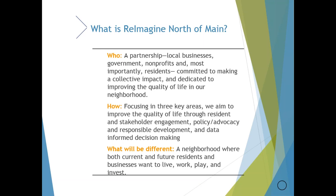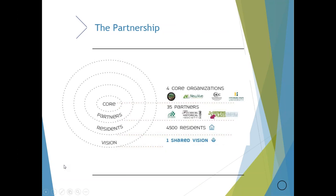Our common agenda is to make the North of Maine a place of choice — a place where people want to live, work, invest, and play. As the backbone agency, MOC provides, through myself and a full-time coordinator, the overarching structure. We do data management, provide fiscal support, policy and advocacy, communication, facilitation, and overall alignment of resources and capacity. We have three other main partners: the City of Fitchburg, Fitchburg State University, and New View Communities, our local CDC. We have 35 other partner agencies and also work to engage 4,500 residents in our target neighborhood.